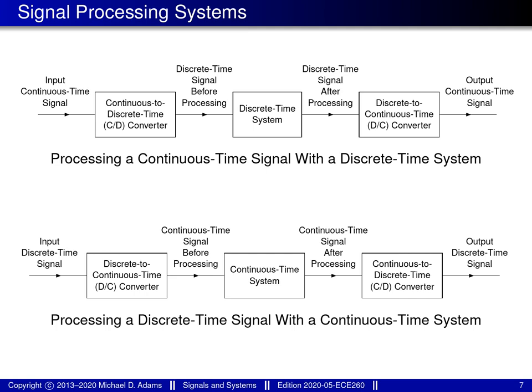I'd like to introduce some of the general application areas in which the mathematics of signals and systems can be used. The first is what I'd loosely refer to as signal processing systems. Essentially we have some kind of analog signal that we want to process — the world we live in is analog — but we want to process it using a discrete-time device, basically a digital computer. To do this, we first convert the analog signal into a digital signal, process it, and then convert it back to analog. This embodies the processes of sampling and interpolation.